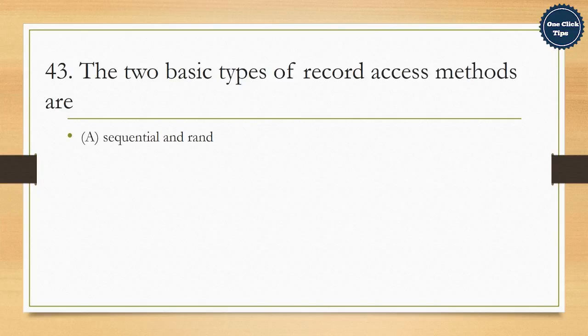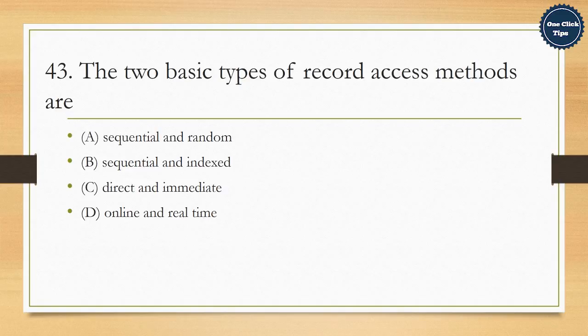43. The two basic types of record access methods are A. Sequential and random, B. Sequential and indexed, C. Direct and immediate, D. Online and real time. The correct answer is A. Sequential and random.